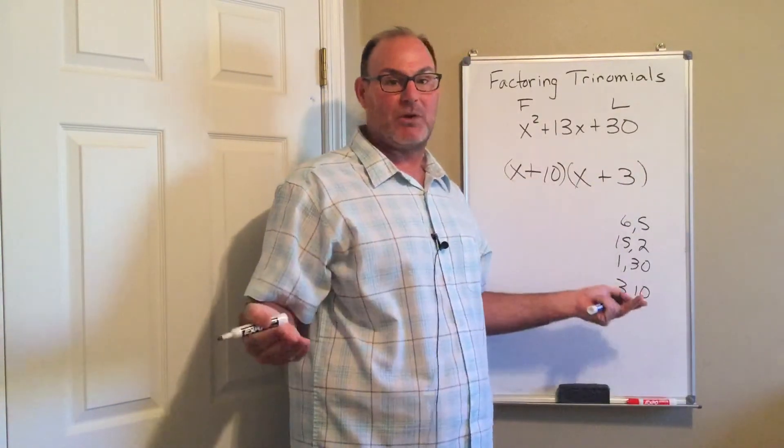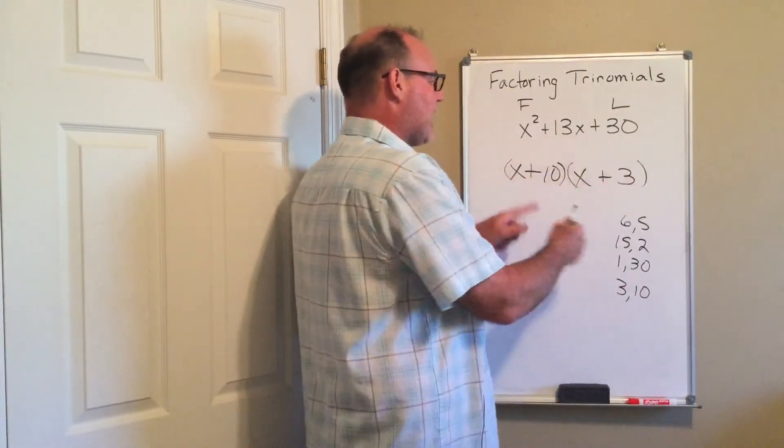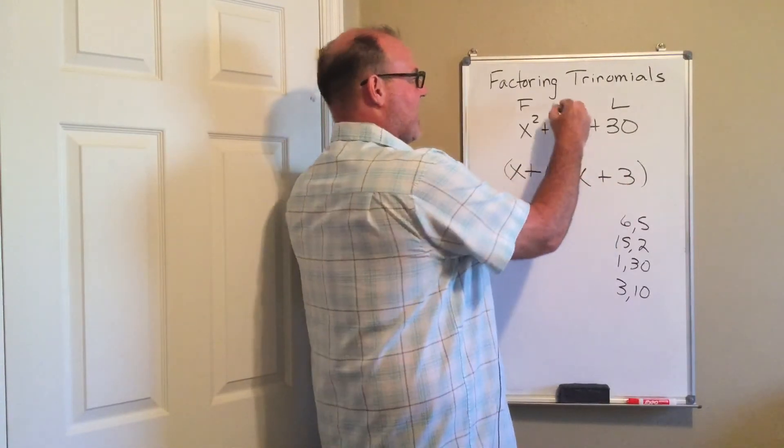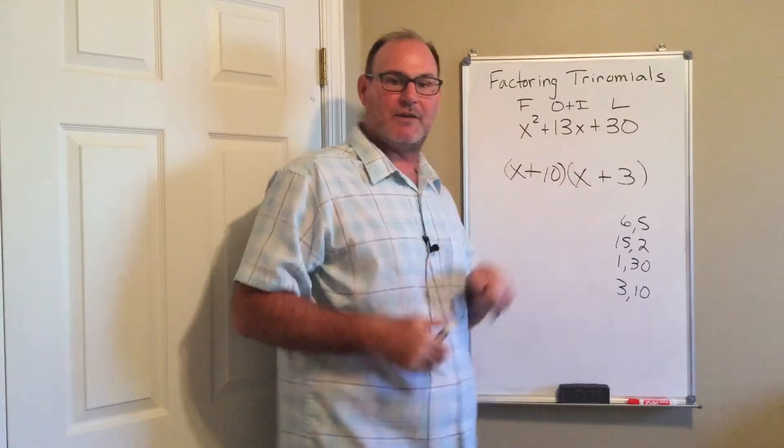And again, as always, remember when factoring, just re-multiply. My outers are 3x. My inners are 10x. And that gives me my 13x here in the middle.